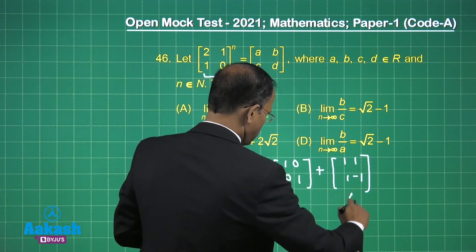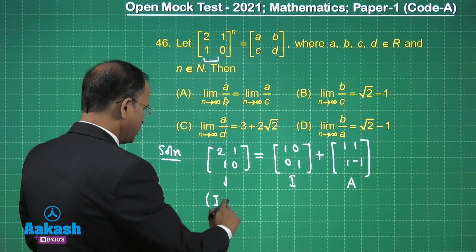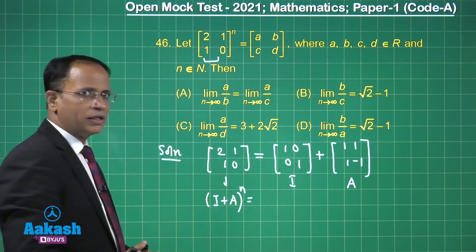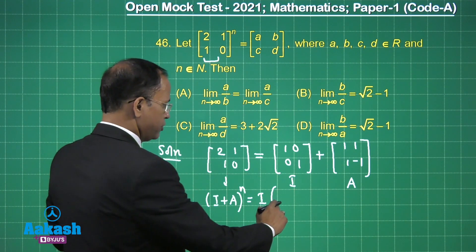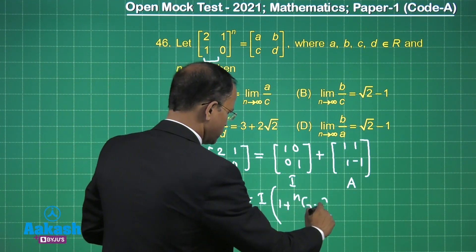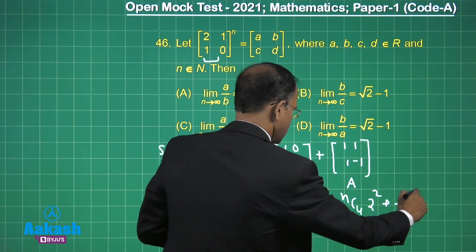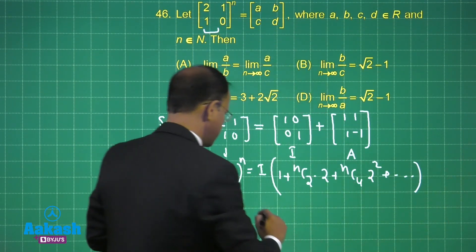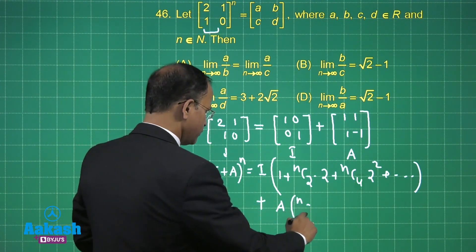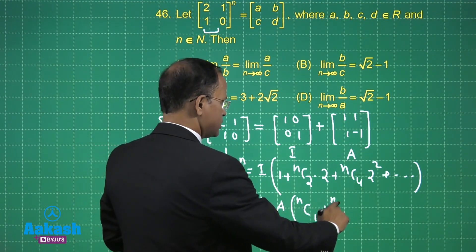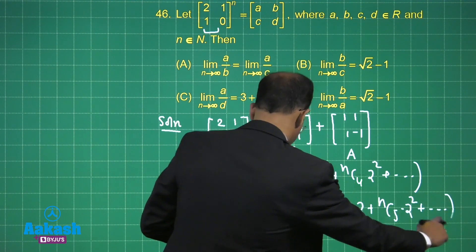We are talking about A — this is A we have, and this is I. So we are talking about (I + A) raised to the power n. We have to use the binomial expansion in this case. So this is going to be: taking I to be common, the first term is 1, then we have nC2 times 2, then nC4 times 2 squared, and so on. Then we have the next part — taking A common — nC1, then nC3 times 2, then nC5 times 2 squared.